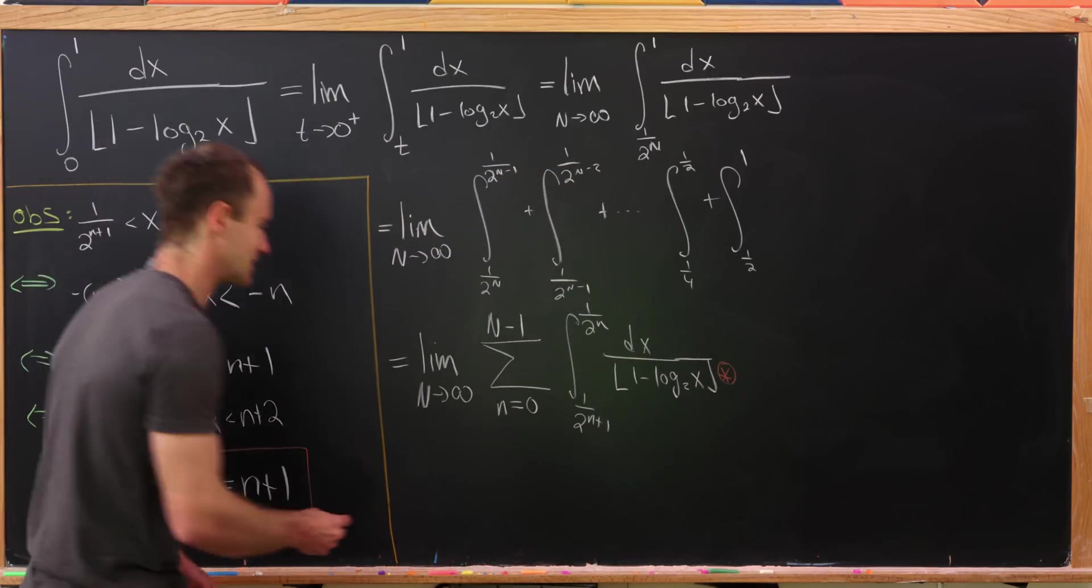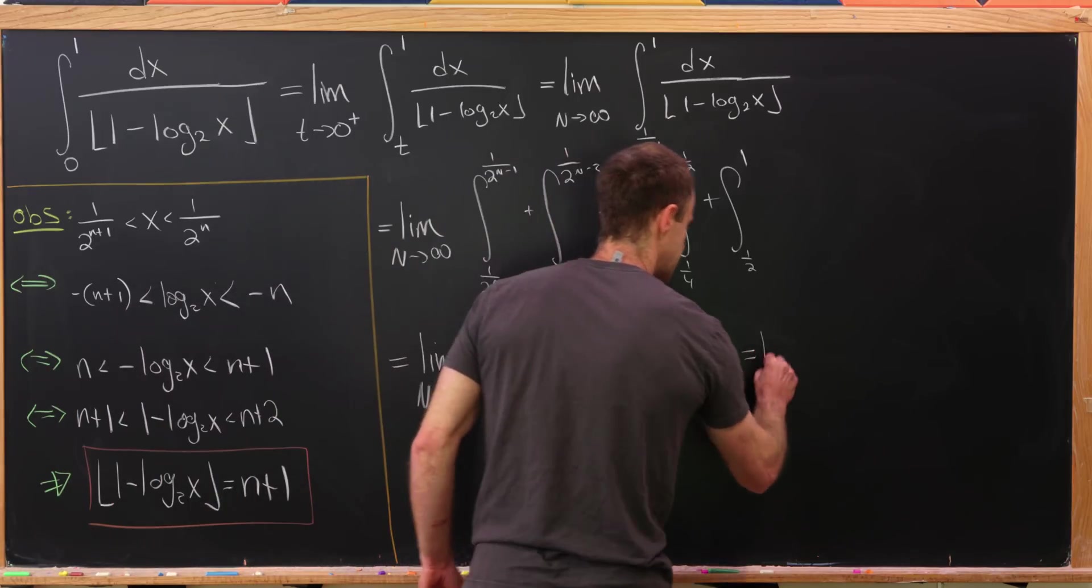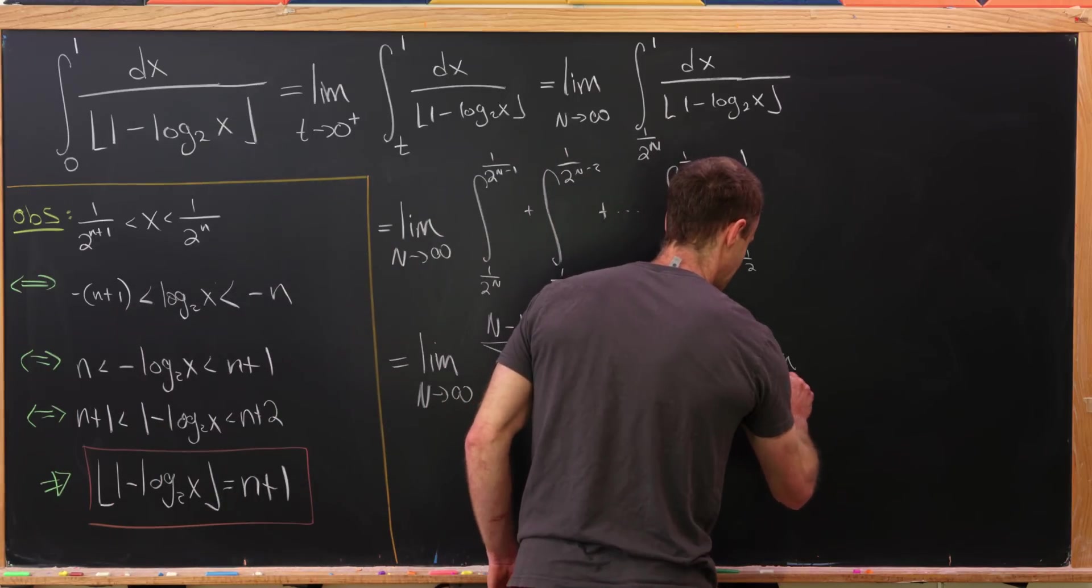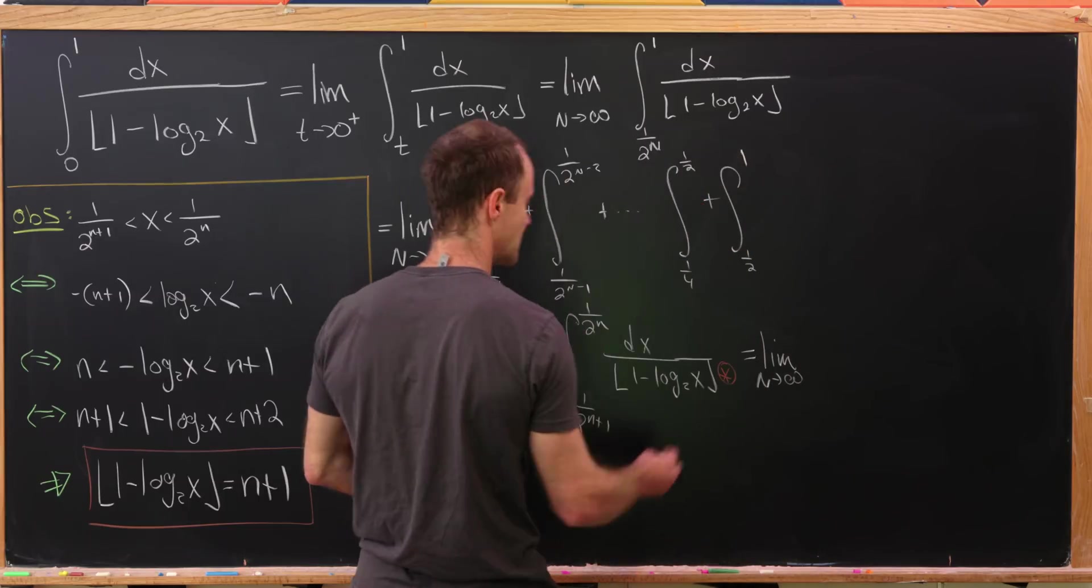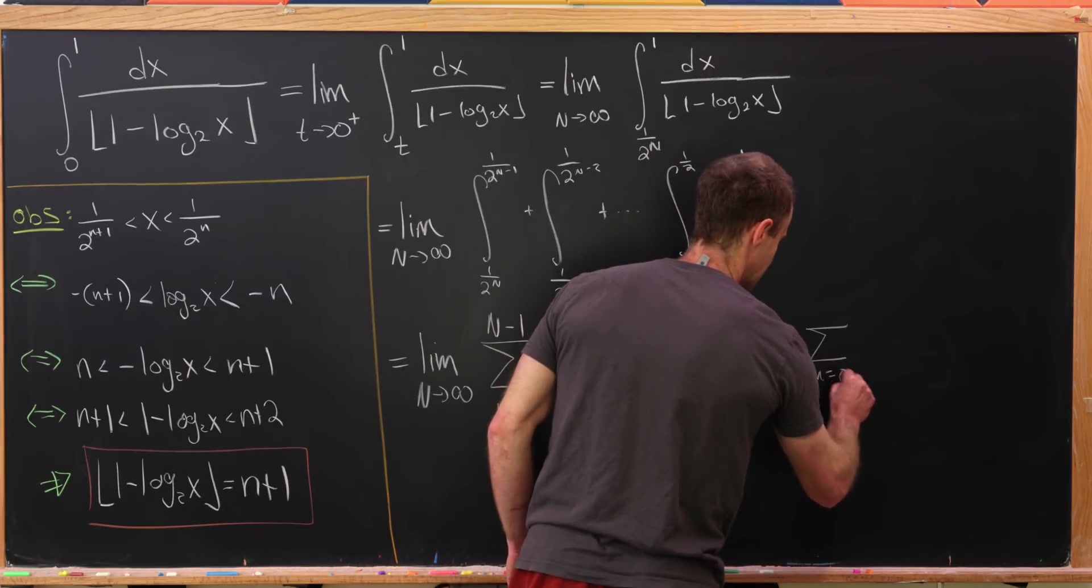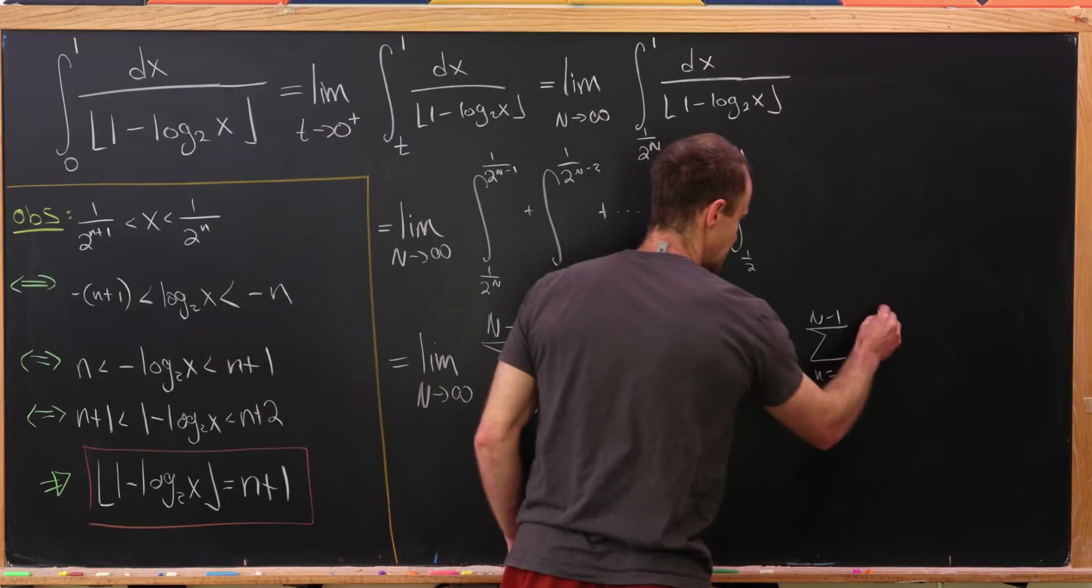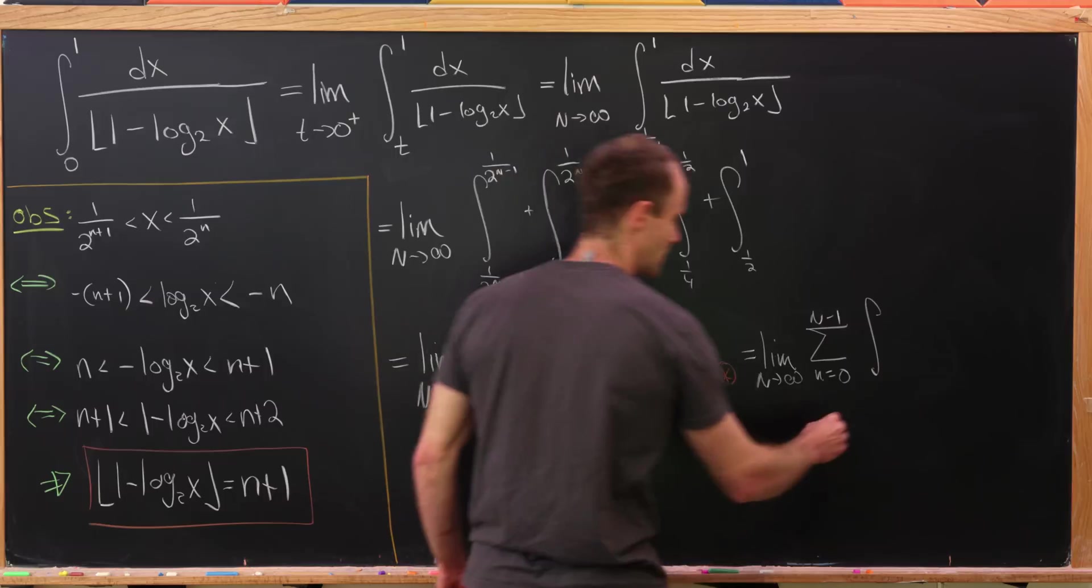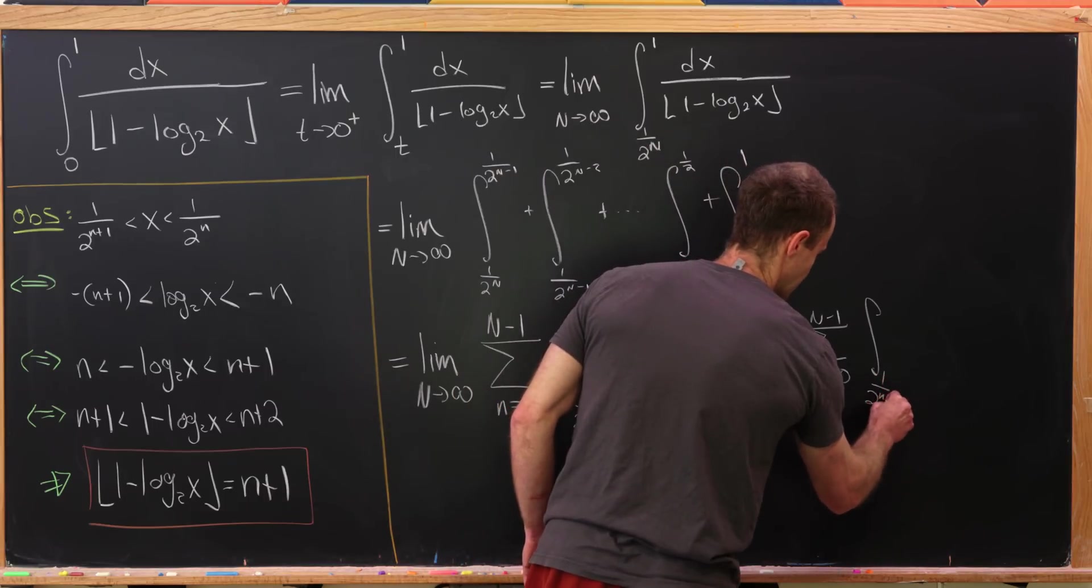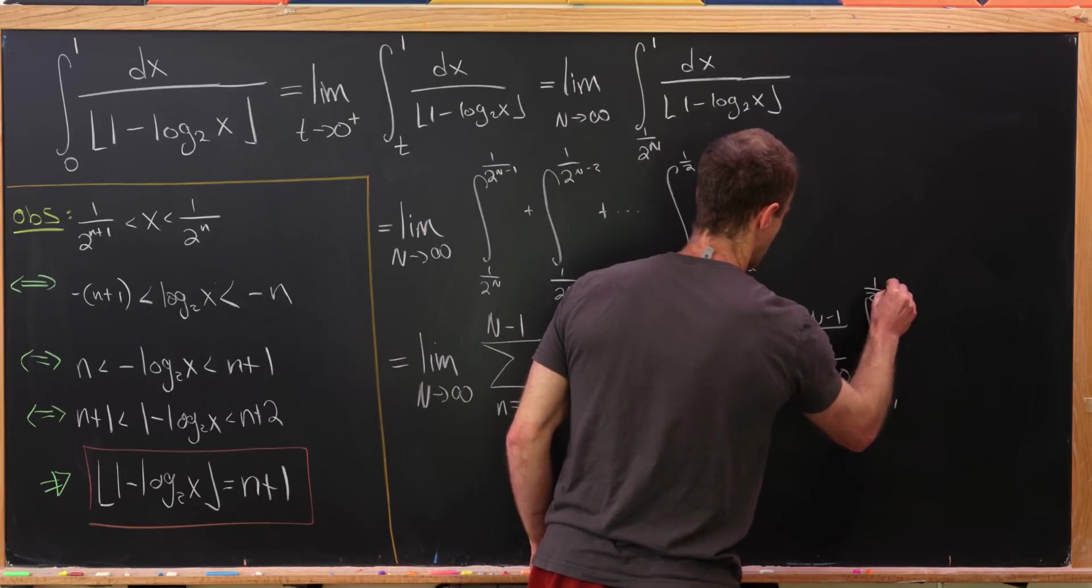Okay, so let's see where that leaves us. So we'll still have this limit as capital N goes to infinity. We'll still have this sum as little n goes from 0 to capital N minus 1. And then we'll have the integral from, well, it's the same bounds of integration. So 1 over 2 to the n plus 1 to 1 over 2 to the n.